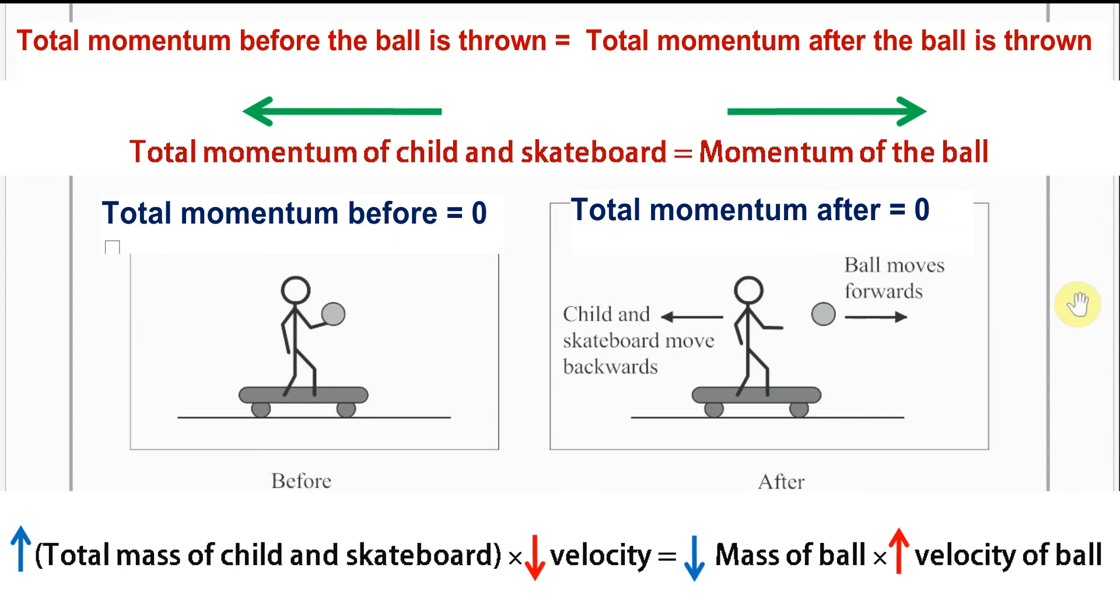As the mass of the child and skateboard is greater than the mass of the ball, the velocity of the child and the skateboard will be lower.